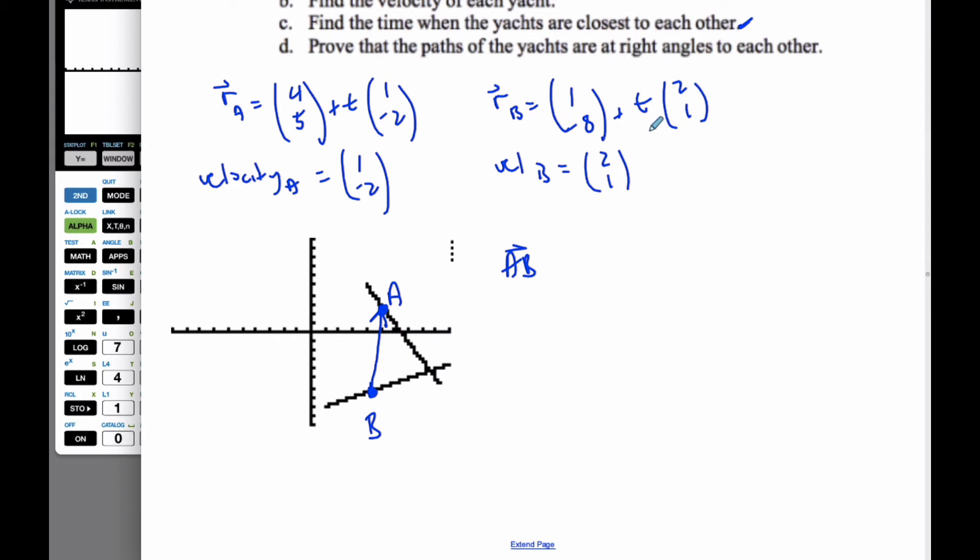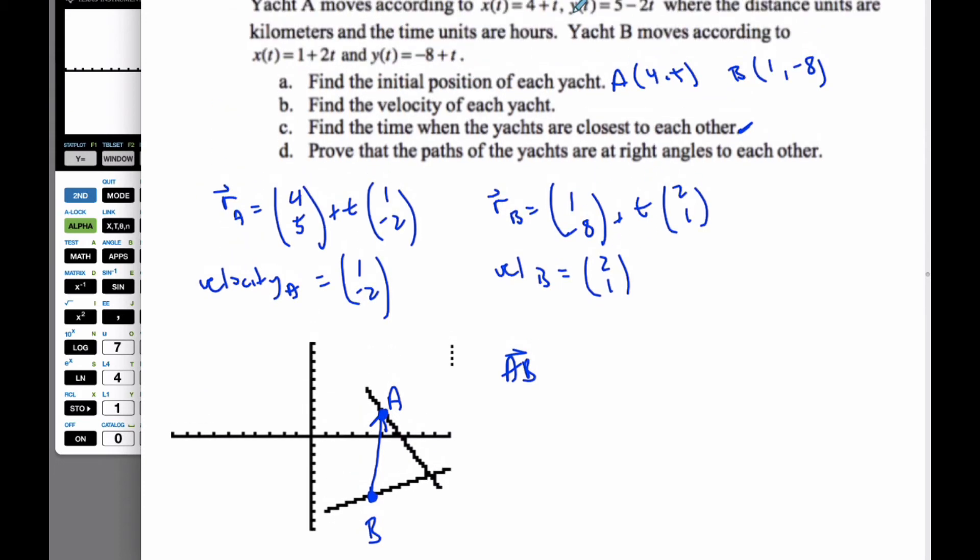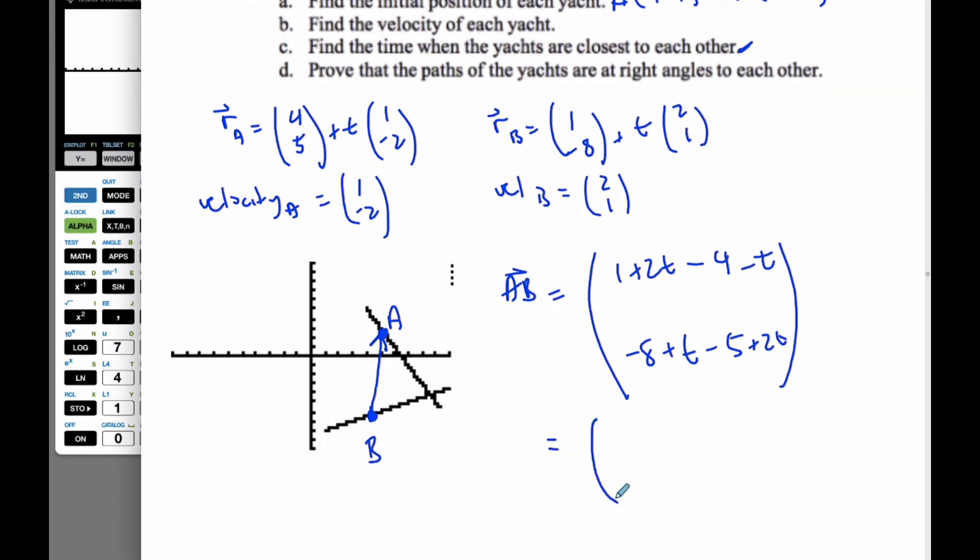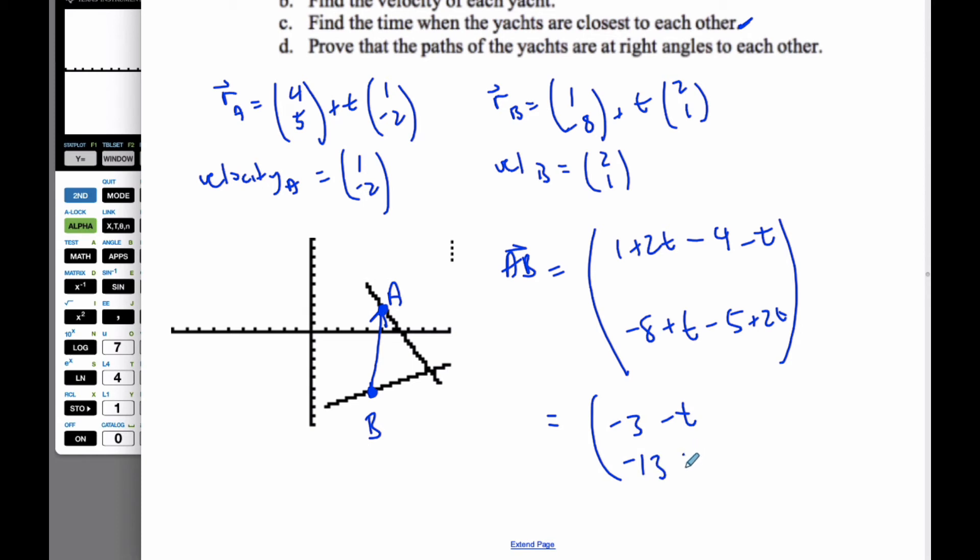And so what I'm going to do is I'm going to find vector AB. And so I'm going to take the B vector. I'm going to take my X values and then go to B, 1 plus 2T, subtract the A, which is 4 plus T. B is going to be, or the Y value is going to take -8 plus T, subtract 5 minus 2T. And so simplifying that, I end up with the vector (-3 - T, -13 + 3T). And so that is vector AB here.